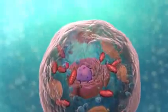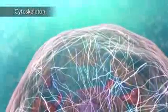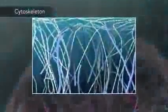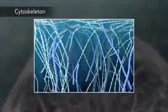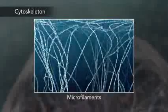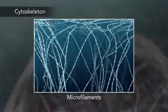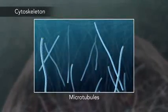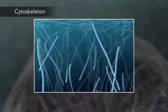Meanwhile, the cell maintains its shape through a cytoskeleton. The cytoskeleton includes the thread-like microfilaments, which are made of protein, and microtubules, which are thin, hollow tubes.